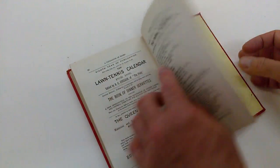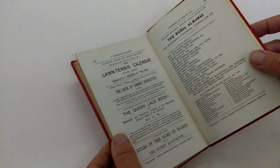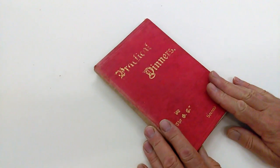Loads of lovely adverts at the back. Lawn tennis calendar for 1890 coming up. There we are. Thanks very much indeed. Bye.